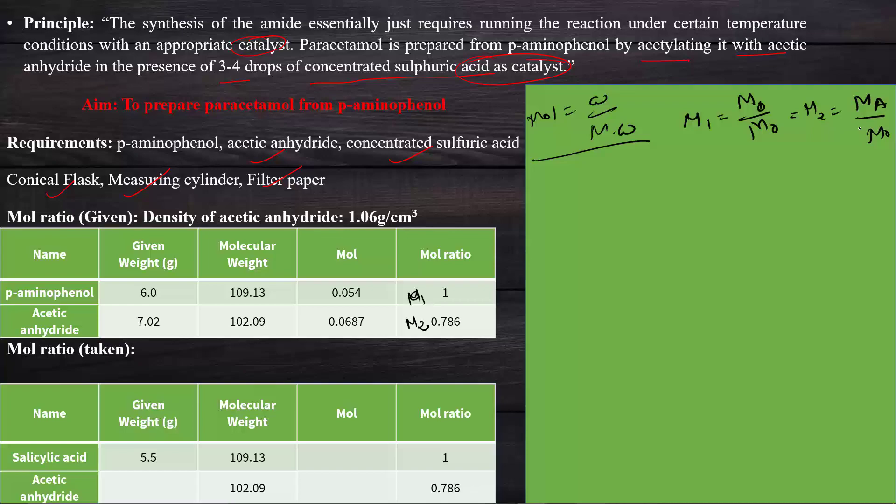Now using this mole ratio we switch to the taken amount. In the taken amount, 5.5 grams of salicylic acid divided by its molecular weight gives the moles, which is 0.050. We can call this C, this is D, this is E, this is F, this is G and this is H. Our main target is to get H to complete the reaction. C into E equals F. The value of C is 0.050 and the mole ratio of acetic anhydride from the previous table is 0.0786, so we get the moles of acetic anhydride as 0.039.